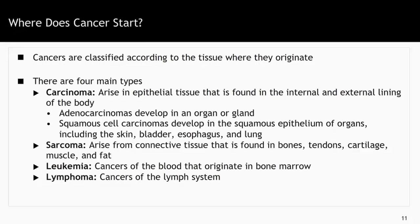Cancers are classified according to the tissue where they originate. There are four main types. Carcinomas arise in epithelial tissue found in the internal and external linings of the body. Adenocarcinomas, the most common form of cancer, develop in an organ or gland — for example, prostate cancer, breast cancer, liver cancer. Squamous cell carcinomas develop in the squamous epithelium of organs including the skin, bladder, esophagus, and lung. Sarcomas, which account for less than 10% of all cancers, arise from connective tissue found in bones, tendons, cartilage, muscle, and fat. Leukemias are cancers of the blood that originate in the bone marrow, and lymphoma refers to cancers that develop in the lymph system.